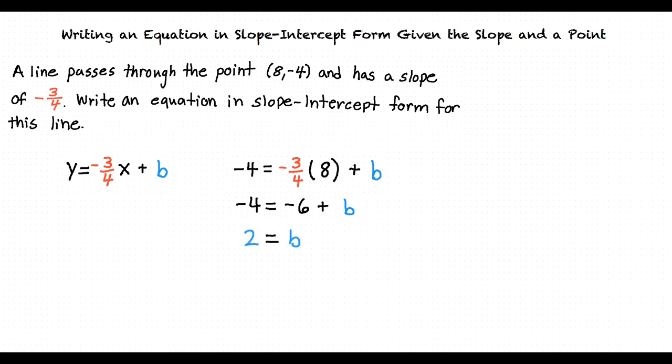Now that we have our value for b, we can use that value and the value for the slope, and substitute them both into the slope-intercept form equation to successfully solve this problem.